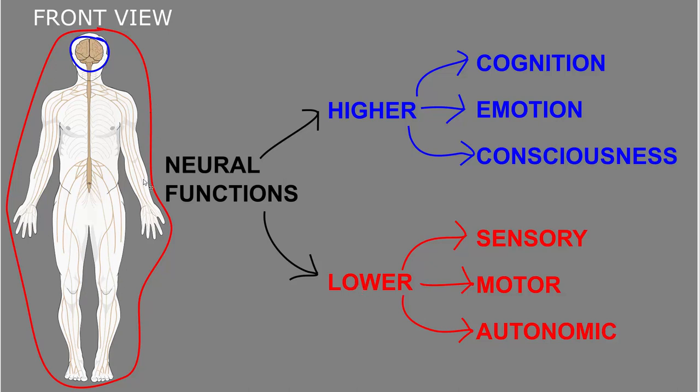Lesions in many different places in the nervous system can cause abnormalities of these lower neural functions. These could be divided in many ways, but I think of them in terms of sensory, motor, and autonomic functions.